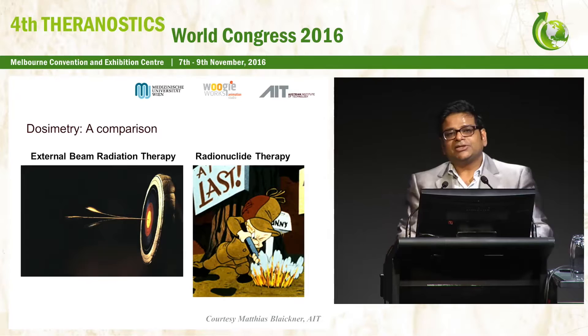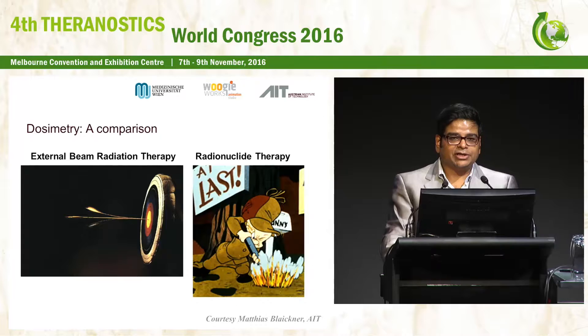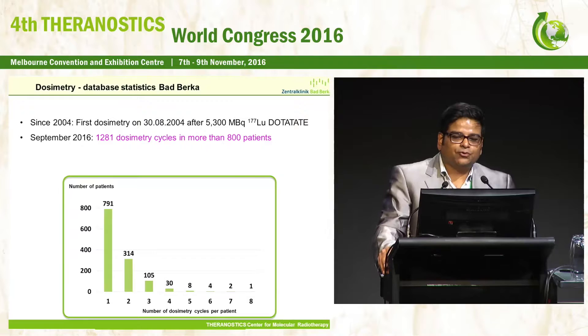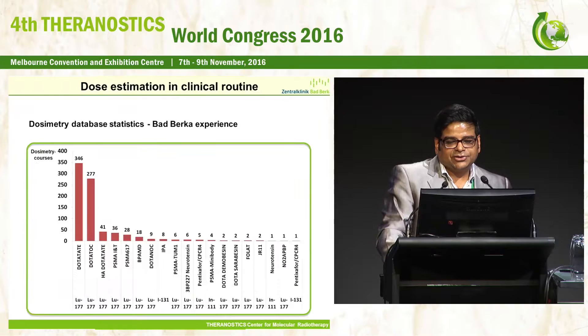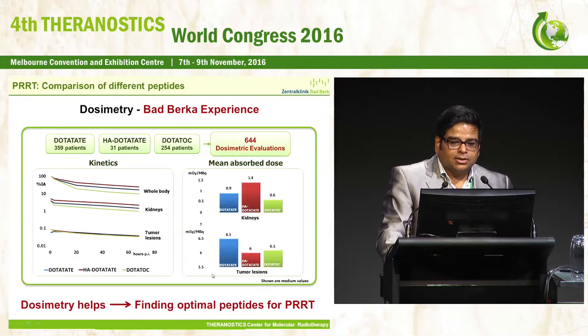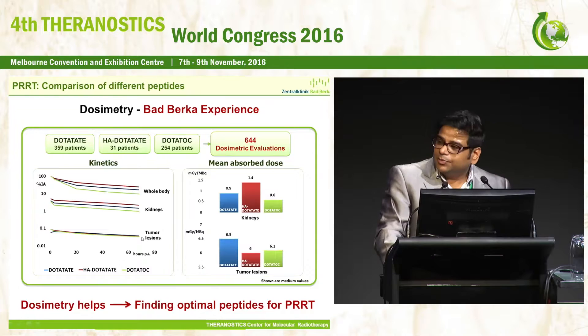For personalized dosimetry, we have a long way to go — otherwise it would be like shooting in the dark. Since the first dosimetry in 2004, we have done about 1,280 dosimetry cycles in more than 800 patients, mostly with DOTATATE and DOTATOC but also several other peptides, ligands, and antibodies. Comparison of three peptides shows minor differences with no major clinical distinctions, confirming that dosimetry helps find the optimal peptides for PRRT.